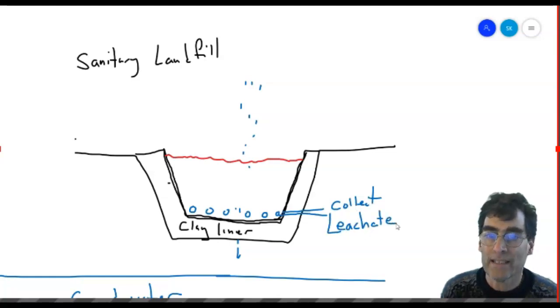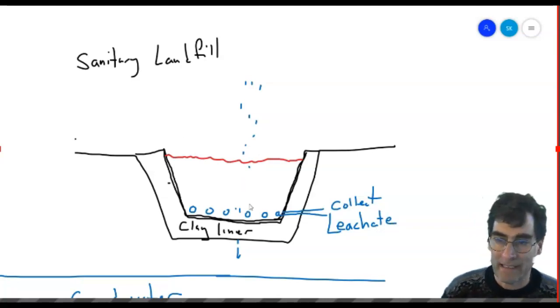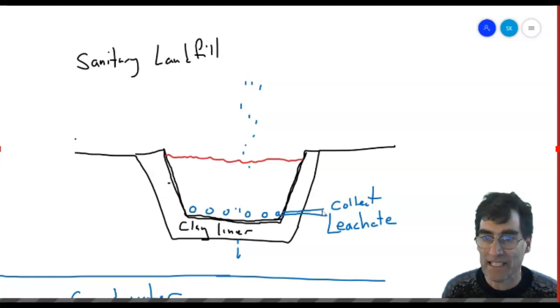Leachate is a liquid that is not just water, but it's water with all of the contaminants that are in the garbage. So this is nasty stuff, but we've got to collect it. Otherwise, it's going to fill up our landfill. So what we're going to do with this is we're going to treat it. We'll take this off-site someplace and we'll treat it. So that solves that problem with the water.